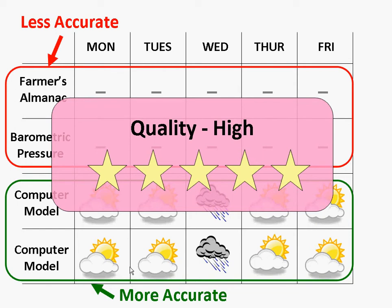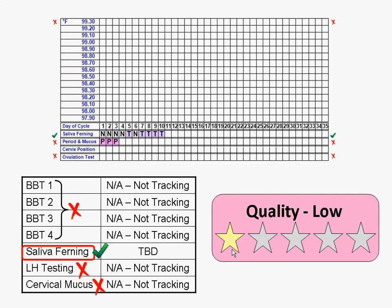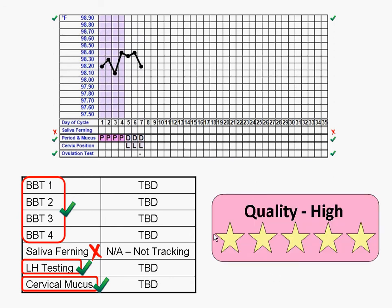Now let's look at the charting example. In this fertility chart, the user is only tracking saliva ferning patterns. Because saliva ferning is not as strongly tied to ovulation as other techniques, any ovulation estimate based solely upon it would have low quality. To achieve higher quality, other symptoms should also be tracked. In this second example, other symptoms are tracked — although none have produced ovulation estimates yet, basal body temperatures, cervical mucus, and ovulation testing are all being recorded. Any resulting overall ovulation date will be scored with high quality because it is based upon techniques with well-established scientific evidence.